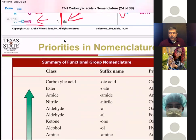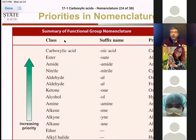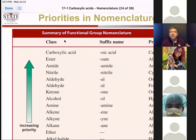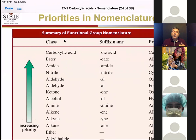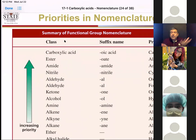I have uploaded onto Tracks and Canvas the newest update of my nomenclature review. It includes a priority table. As you start adding functionality to a material, you need to figure out how to name it — for example, if you have a ketone but also an aldehyde, or a ketone and a carboxylic acid, what's going to take precedent? This table helps us understand that.